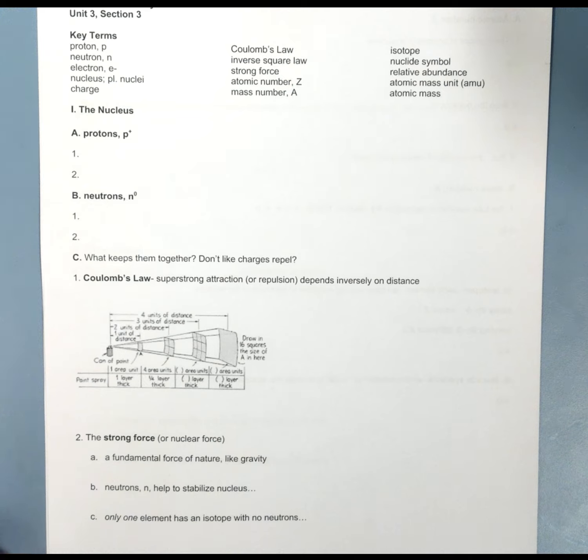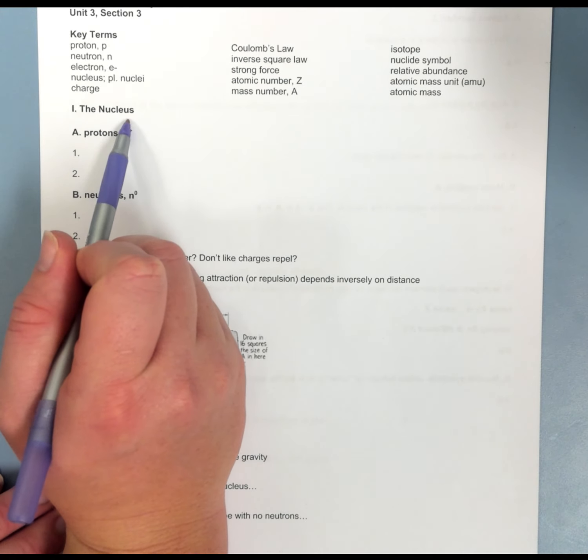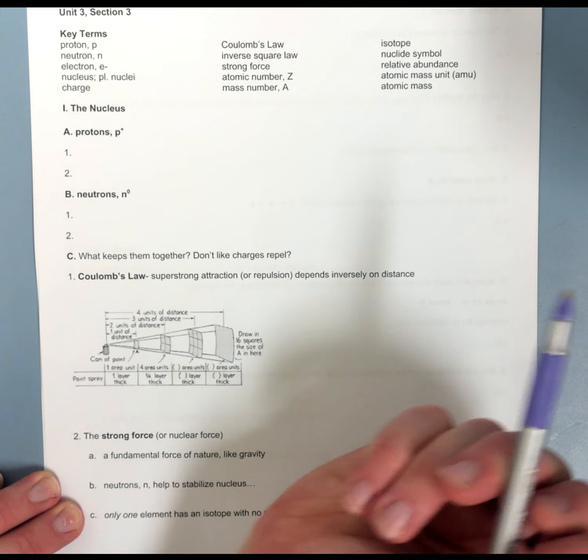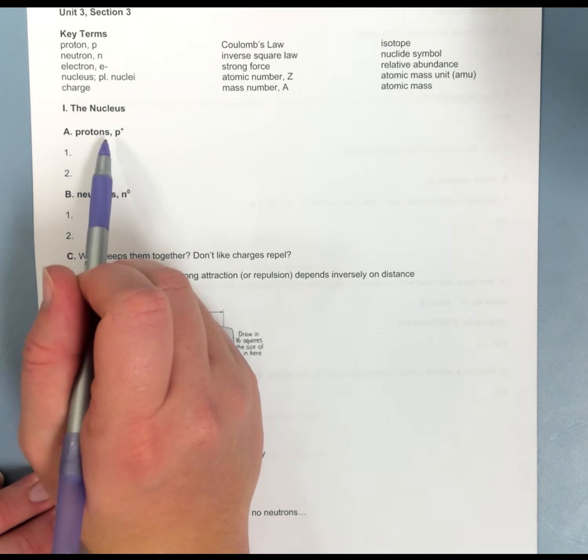For part three of this unit, we're going to really focus in on the different parts of an atom. We know at the center of my atom, I have what we call the nucleus.